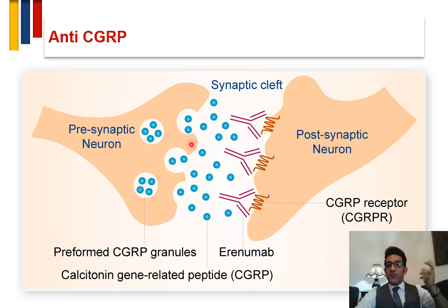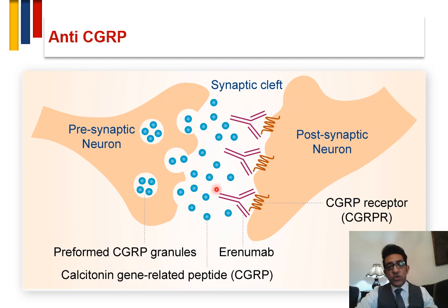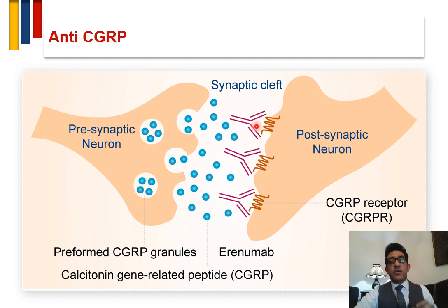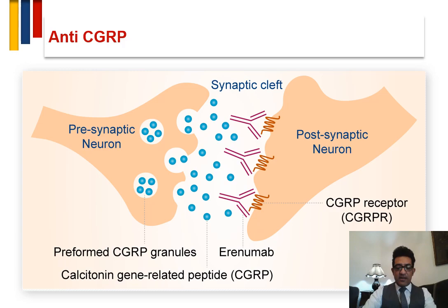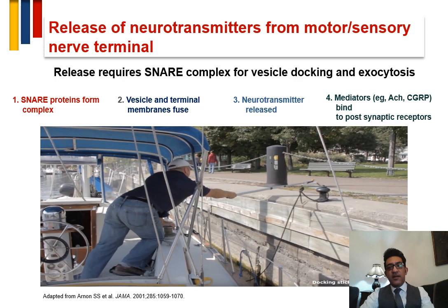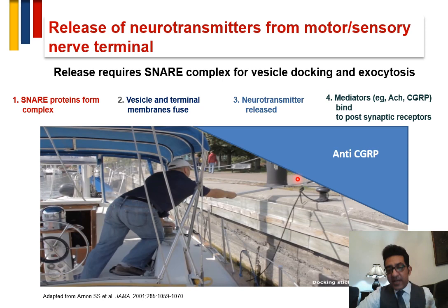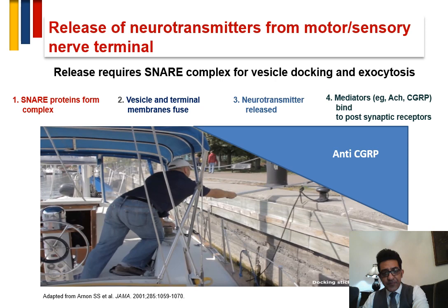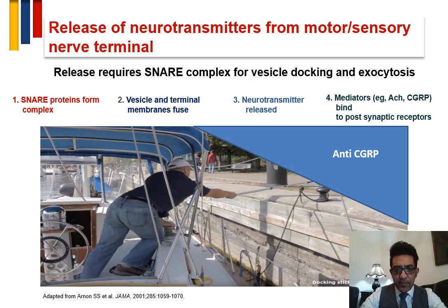Anti-CGRP medications work by a different mechanism. Unlike botulinum toxin, which works presynaptically, anti-CGRP monoclonals work either on the receptor or on the ligand itself — either binding to the receptor or to the ligand. They act post-synaptically, after the neurotransmitter has been released from the vesicle into the synaptic cleft, working at that site rather than presynaptically like botulinum toxin.